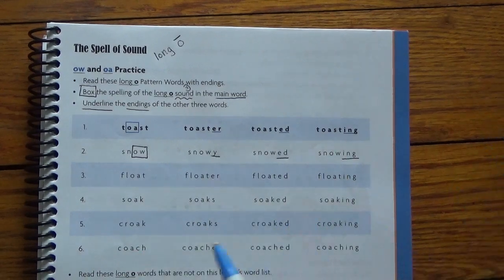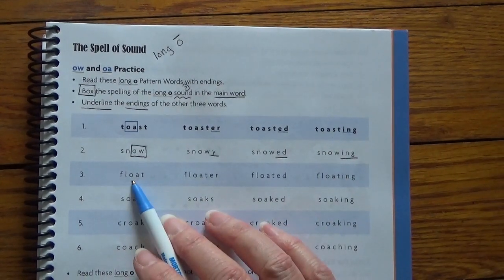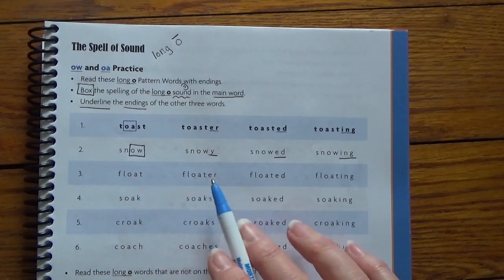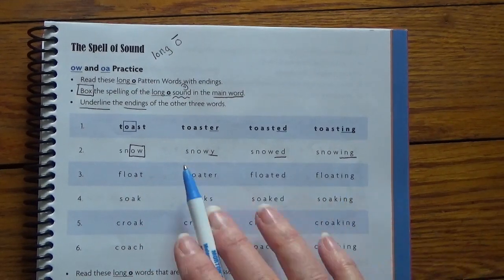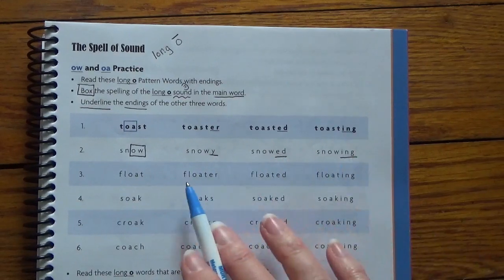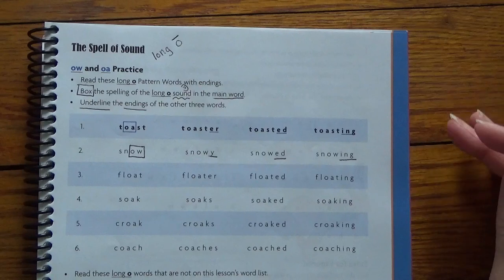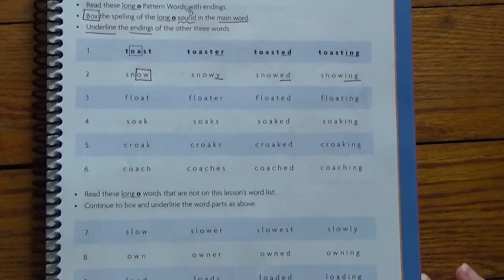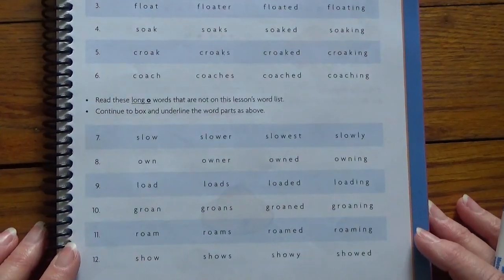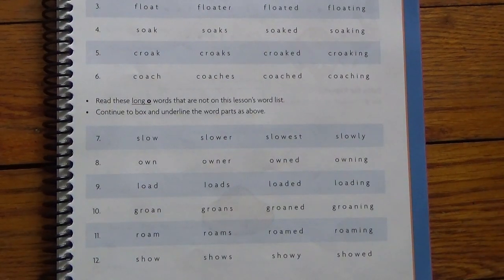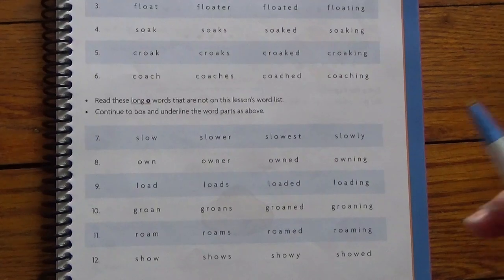Alright. So that's what you're going to do. Box the O-A in the base word or the main word, and then underline the endings in the other three words. Got it. I think we can handle that. Alright, let's go down and look at the bottom half of the page. Not a whole lot to do today. We can handle this.